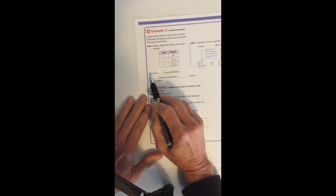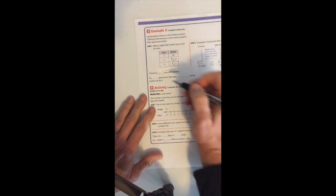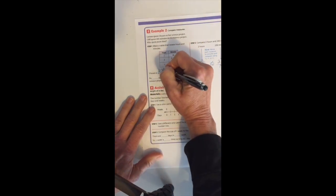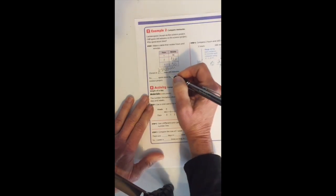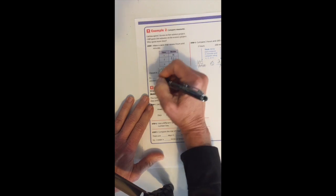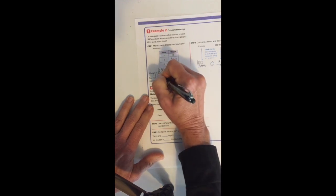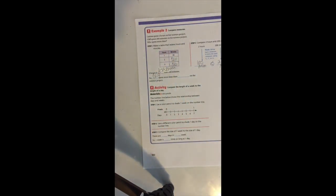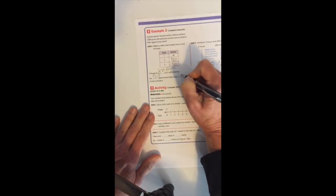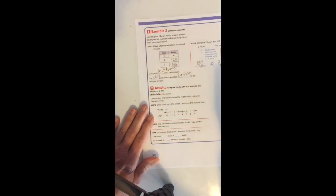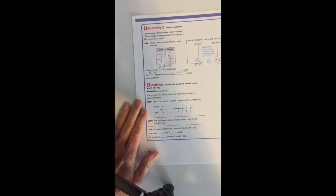So two hours is 180 minutes compared to Cliff who spent 200 minutes, and clearly 180 is less than 200. So two hours is less than 200 minutes, and Cliff spent more time than Larissa on the science project.